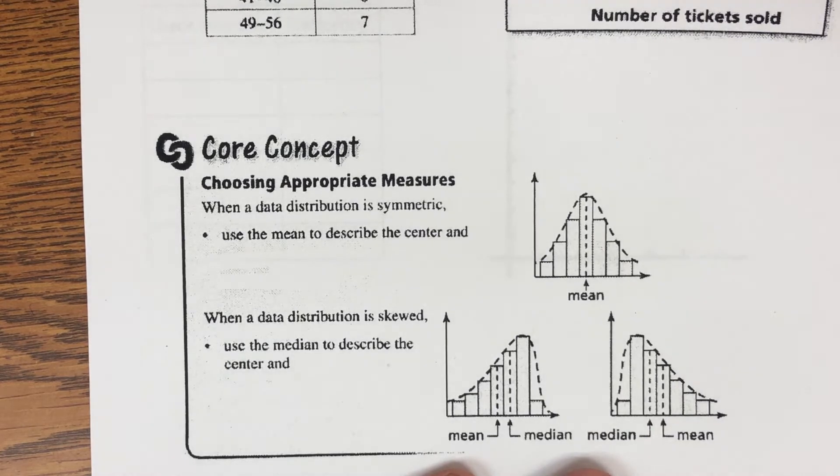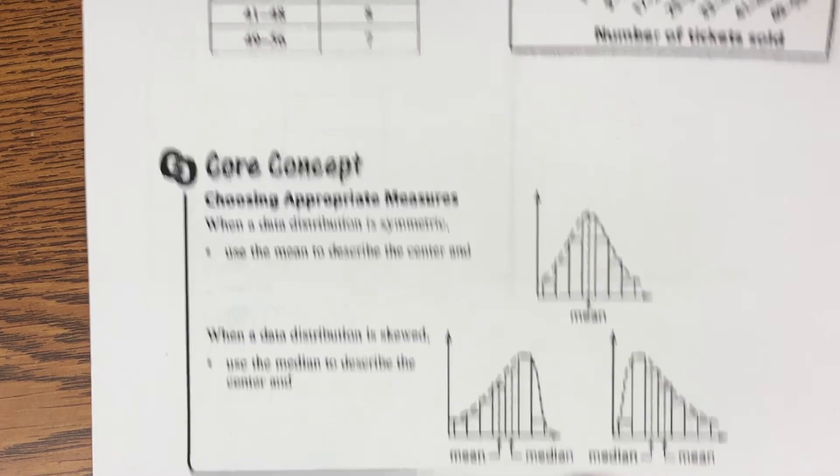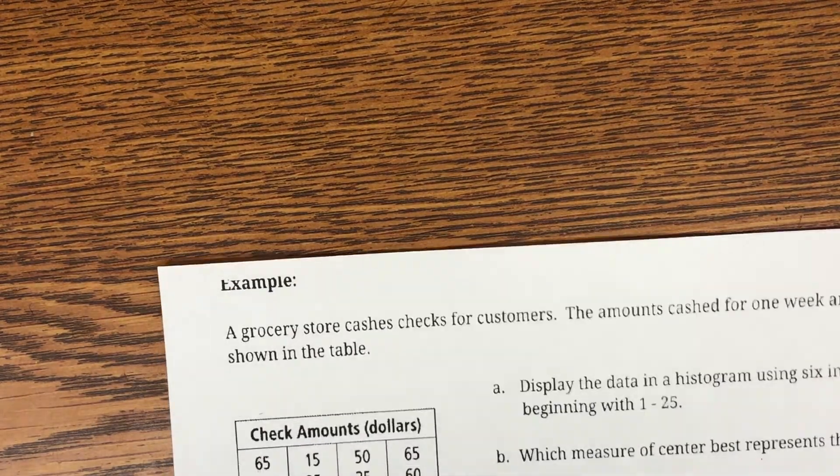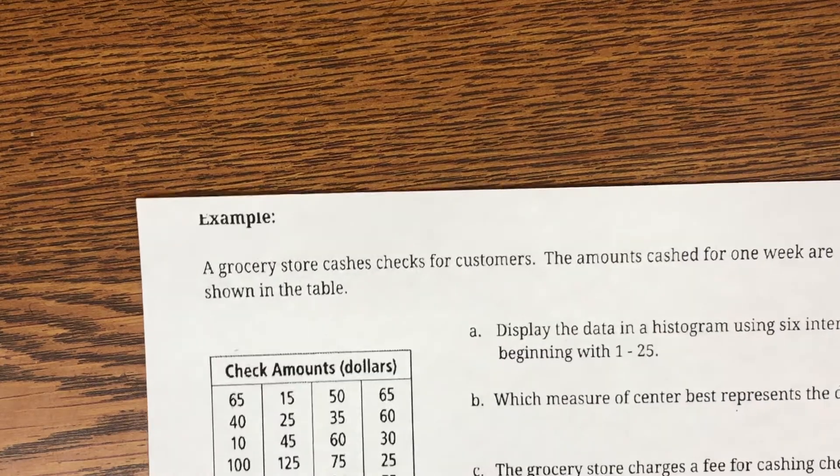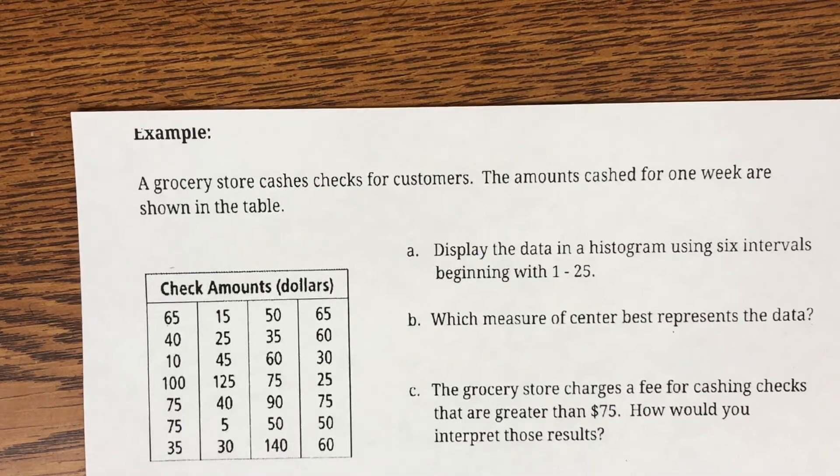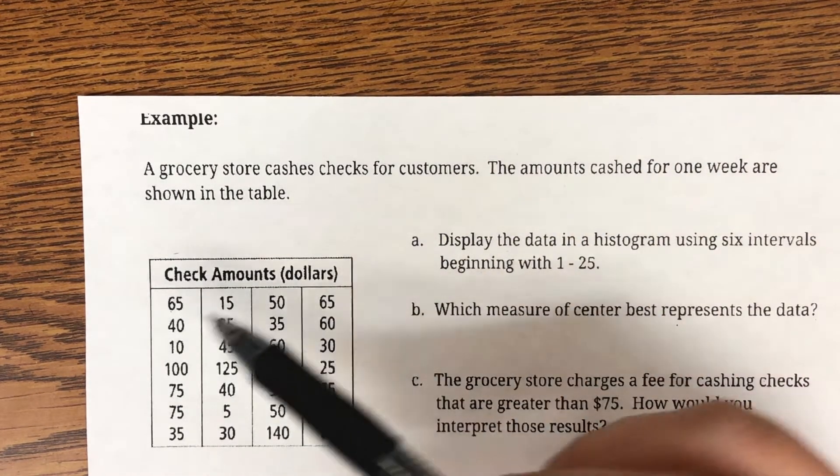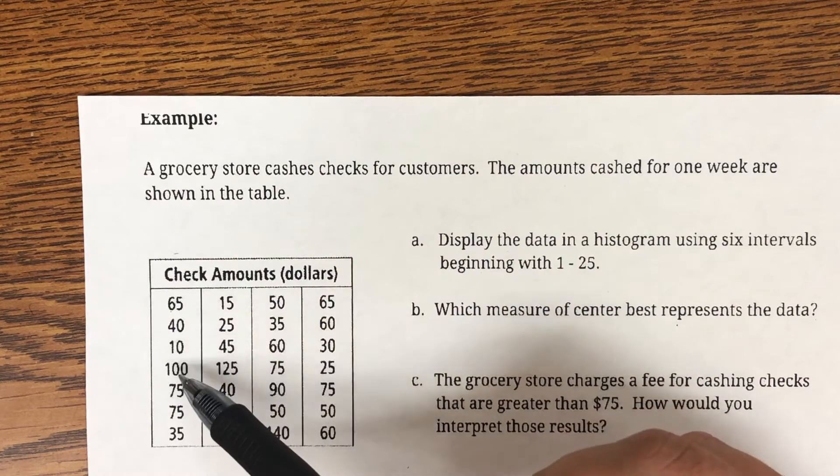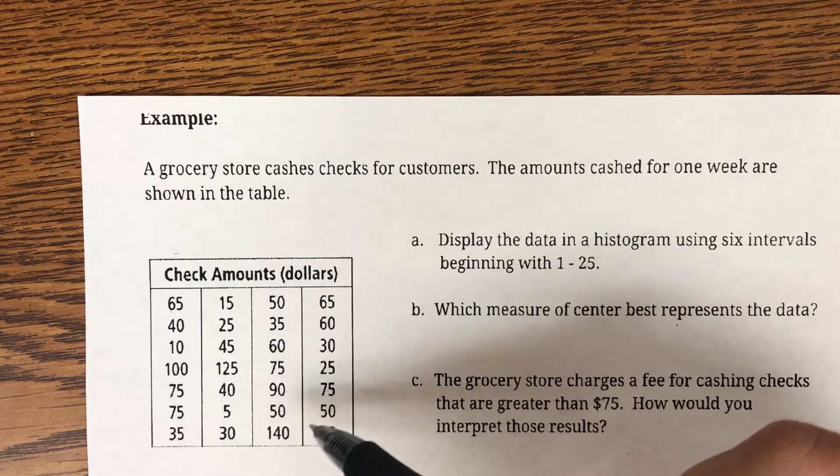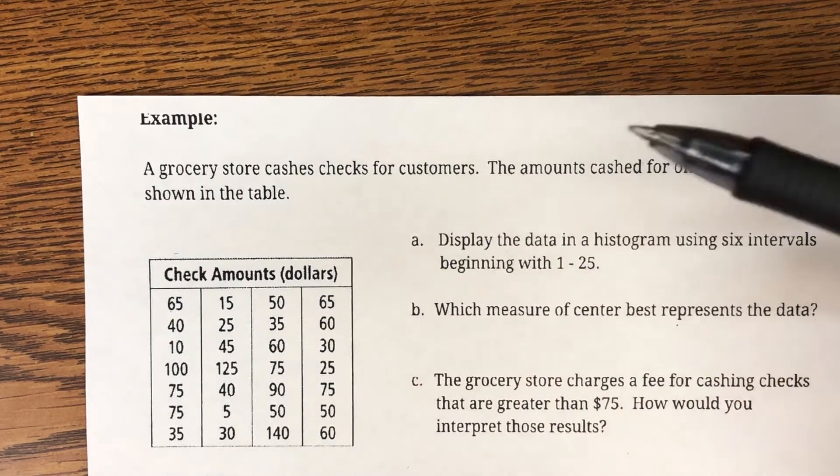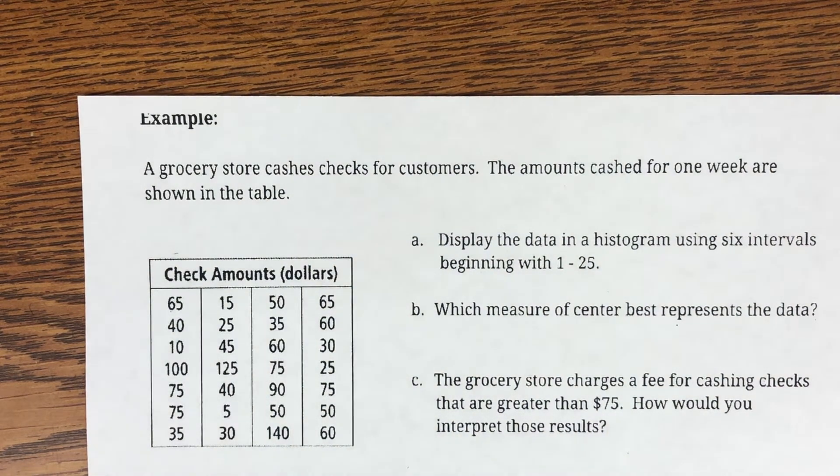So really, all we're going to do is look at a couple histograms, analyze the data, and also draw our own. So, moving on to our next page, we are told that a grocery store cashes checks for customers, and the amounts cashed for one week are shown on the table. We had quite a few amounts of checks, and we need to choose our frequency in which we are going to go up by.